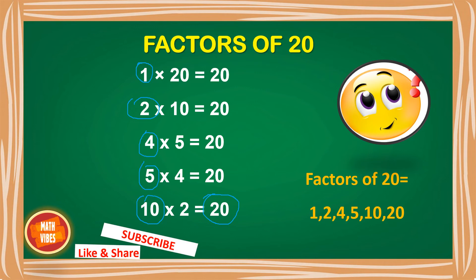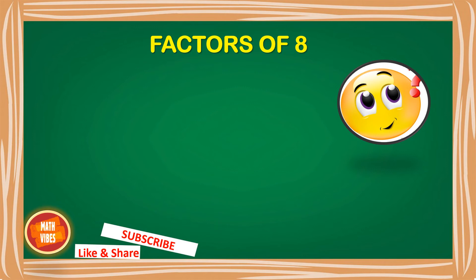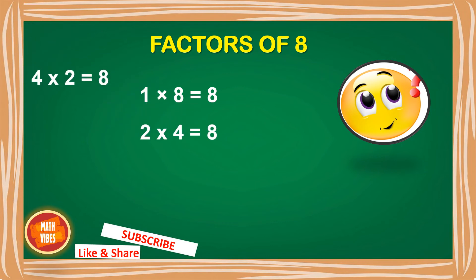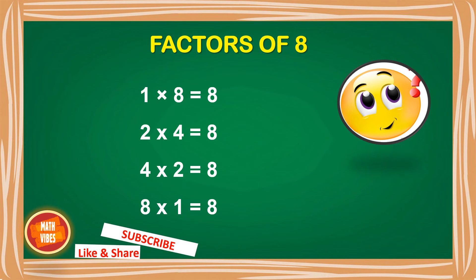Let us find out the factors of 8. In which tables does 8 appear? 1×8=8, 2×4=8, 4×2=8, 8×1=8. Now circle each unique number: 1, 2, 4, and 8. Circling is not compulsory but is advisable when you are just starting to learn factors. Once you have enough practice, you can do it mentally. So the factors of 8 are 1, 2, 4, and 8.